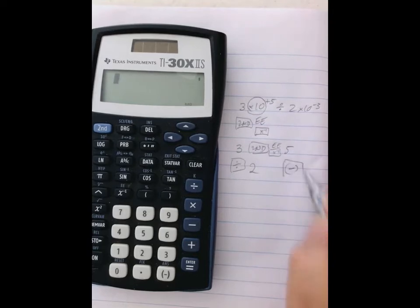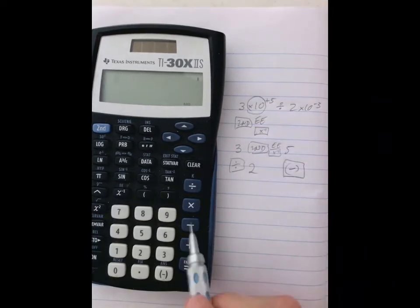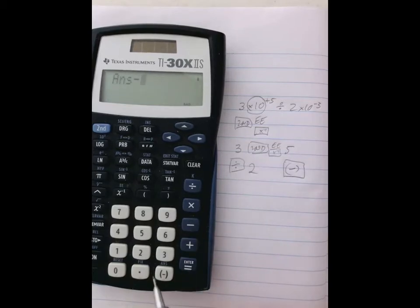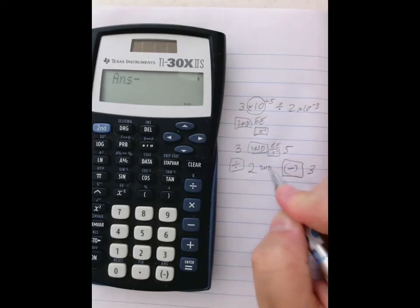And don't forget that on a scientific calculator the negative key is separate from the subtraction key. The negative key is here. Again, times 10 to the, all that is replaced by 2nd EE.